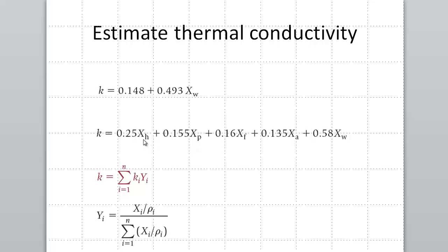Then the next one is the mass fraction for protein. The next one is for the amount of fat. The next one is for the amount of ash content. And then XW is the mass fraction for the amount of water. Now again, remember that we have to use these X values in terms of fractions.